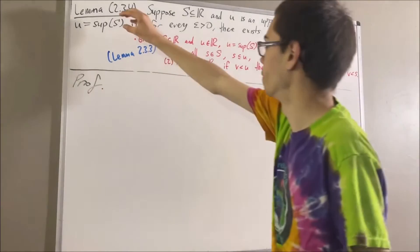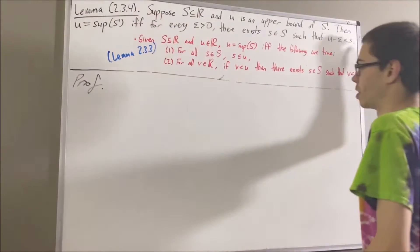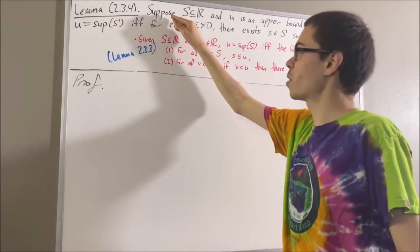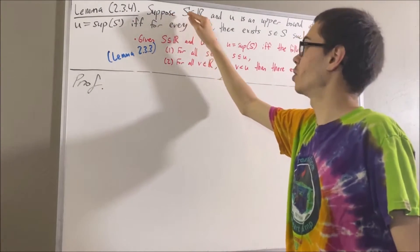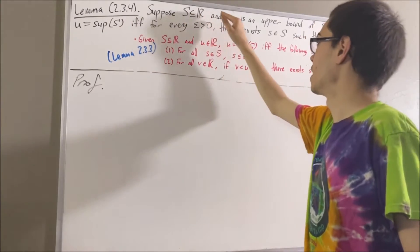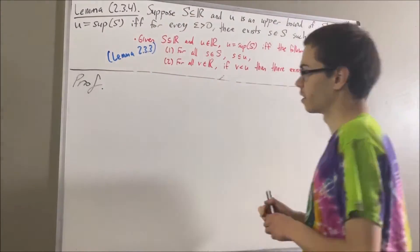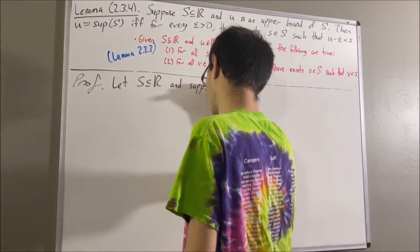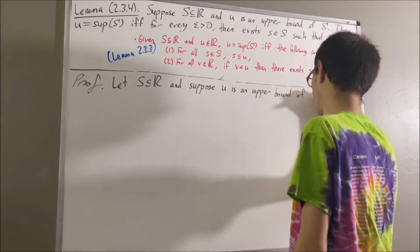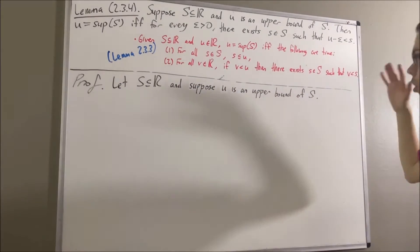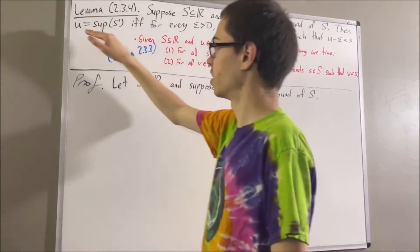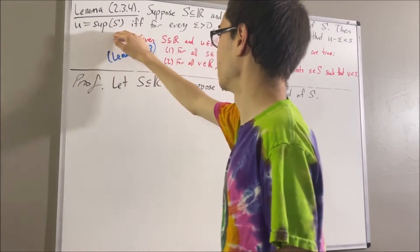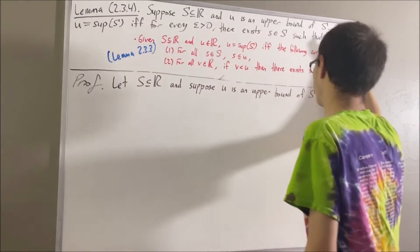Now let's get into the proof of this lemma. To start out the proof, let's give ourselves an arbitrary subset of real numbers S and upper bound u of S. Our goal from here is to prove that u is the supremum of S if and only if this condition is true.